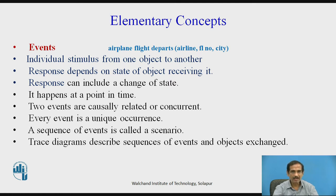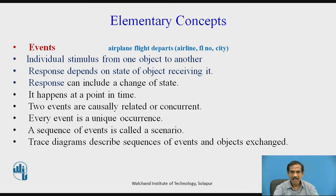Or events may occur at the same time, and then they are called concurrent. Every event is a unique occurrence, and the sequence of events which are put together is called a scenario. A trace diagram describes the sequence of events and the objects which are exchanged.